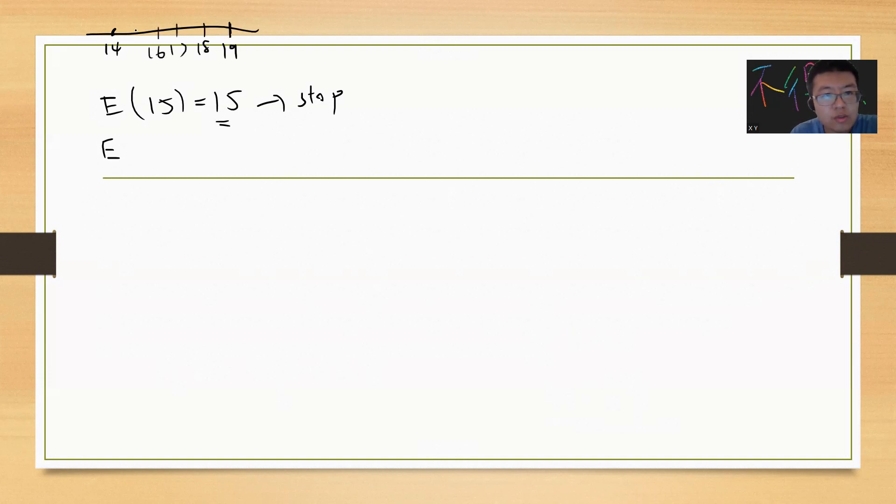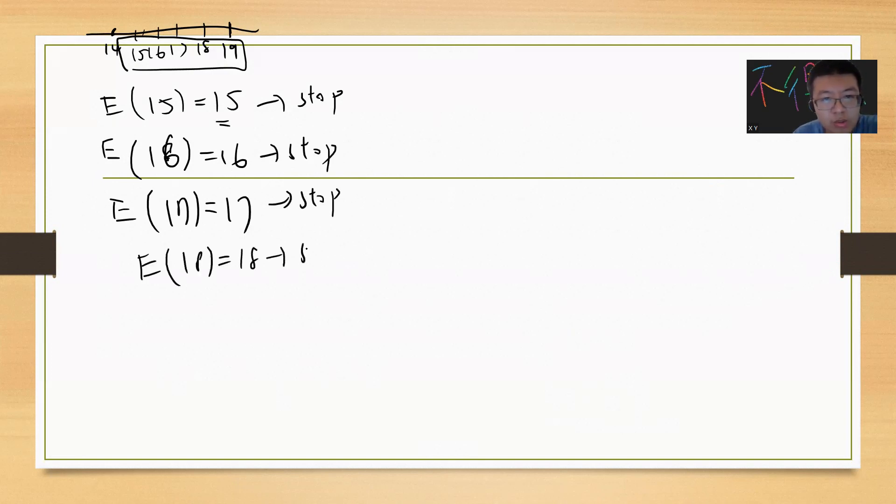In all these cases you will stop. The expectation value of 16 is 16, expectation value of 17 is 17 because you will stop. E(18) = 18 and E(19) = 19.